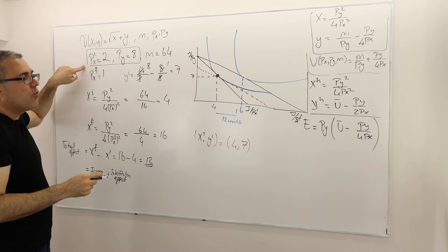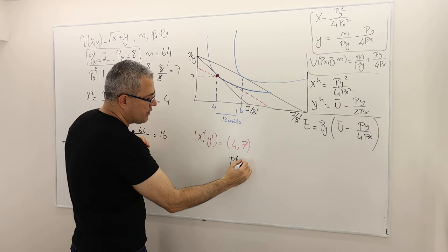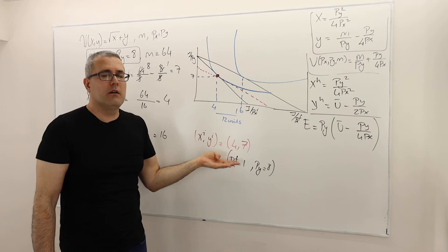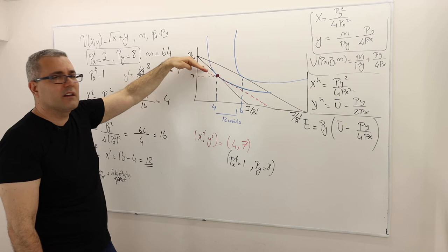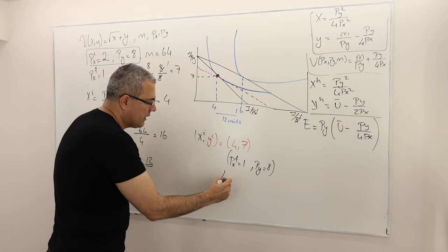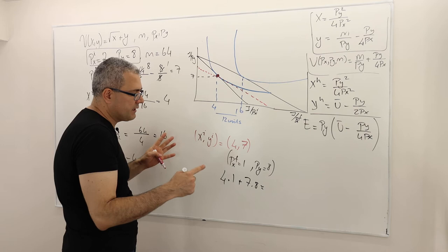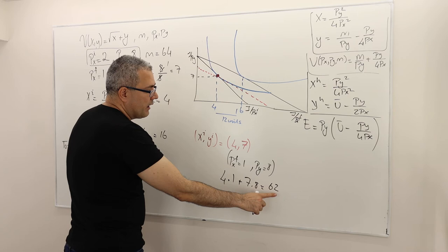How much money would I spend if I was consuming this bundle at PX_F = $1 and PY = $8? Under this new price scheme, the expenditure of bundle (4,7) would obviously be less than $64. You buy 4 units of good X at $1 and 7 units of good Y at $8: 7×8 = 56, plus 4×1 = 4, giving $60 — not $64, because one of the goods is now cheaper.